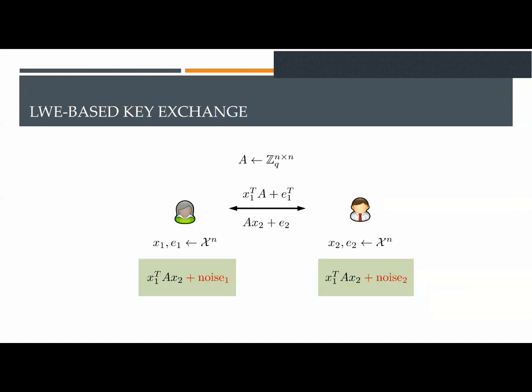Our first observation is that there is indeed a non-interactive key agreement when the noise in the approximate key is very small relative to the modulus q. Remember that after the first round, the parties have x1·A·x2 plus some noise. If the extra noise is small, the parties can remove it by just rounding.